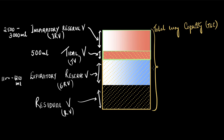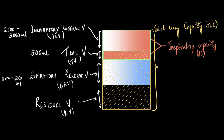The maximum amount of air Ravi can inhale is tidal volume plus inspiratory reserve volume. Together, these two are known as inspiratory capacity (IC).